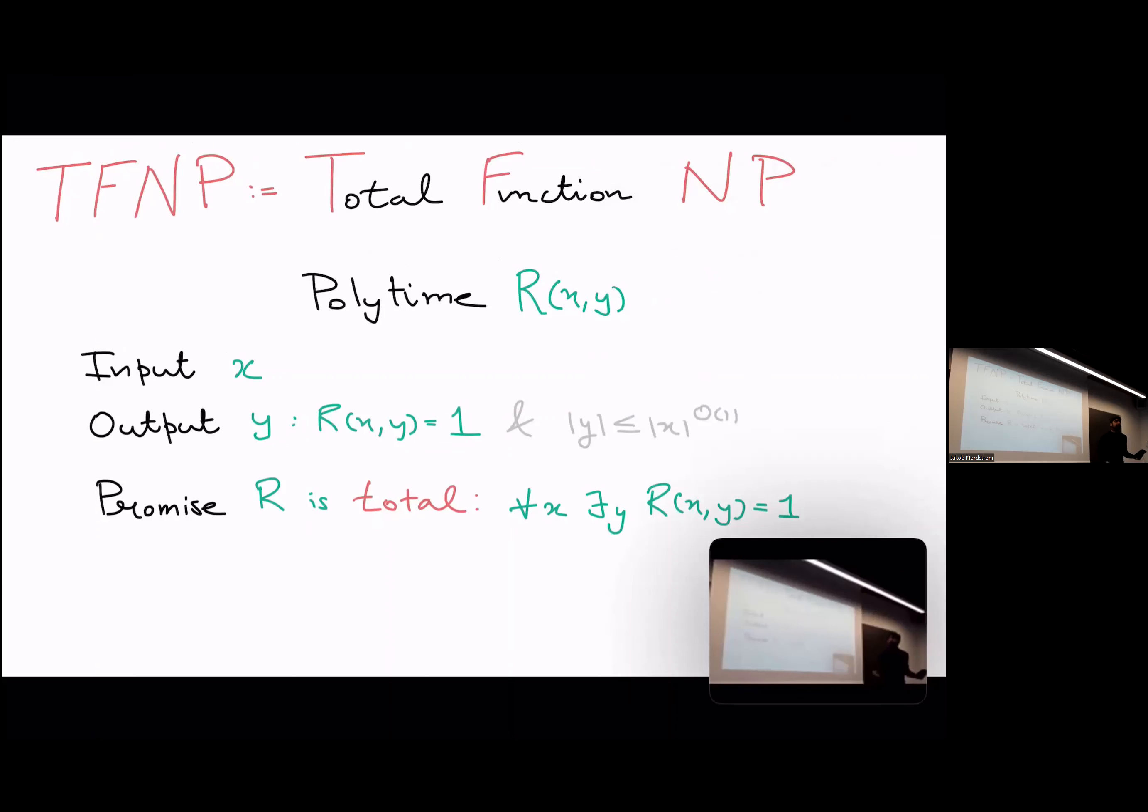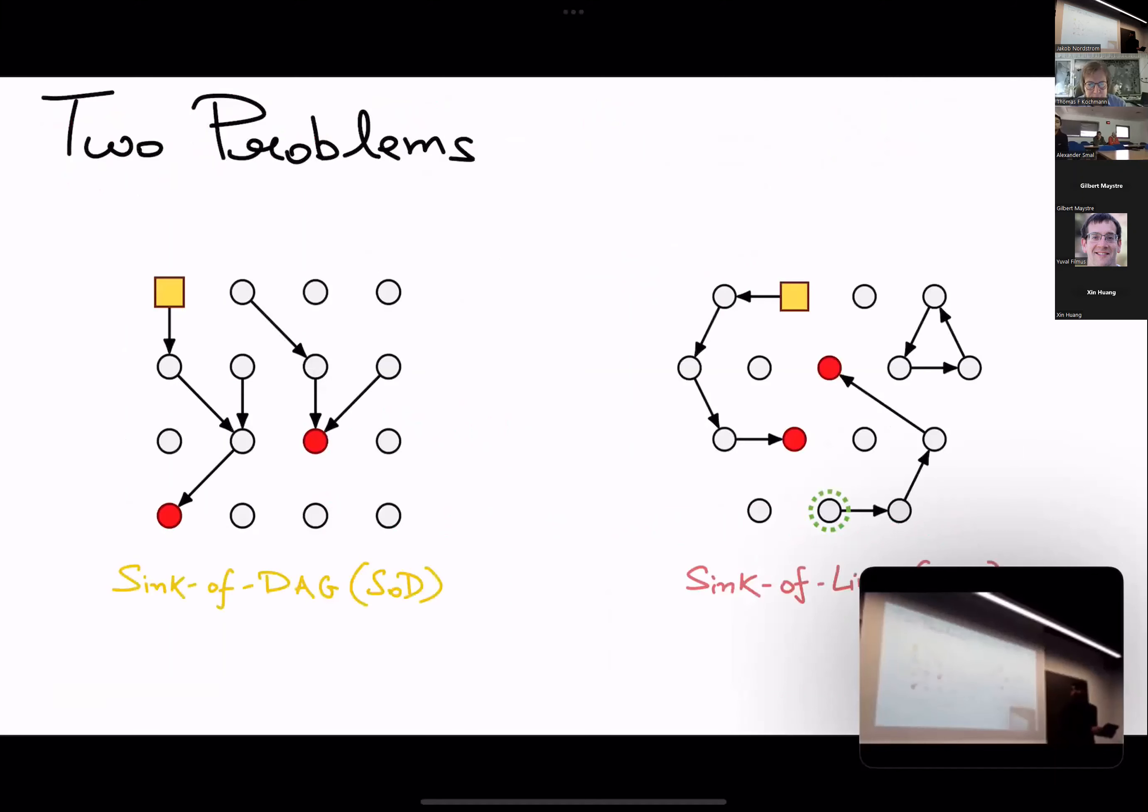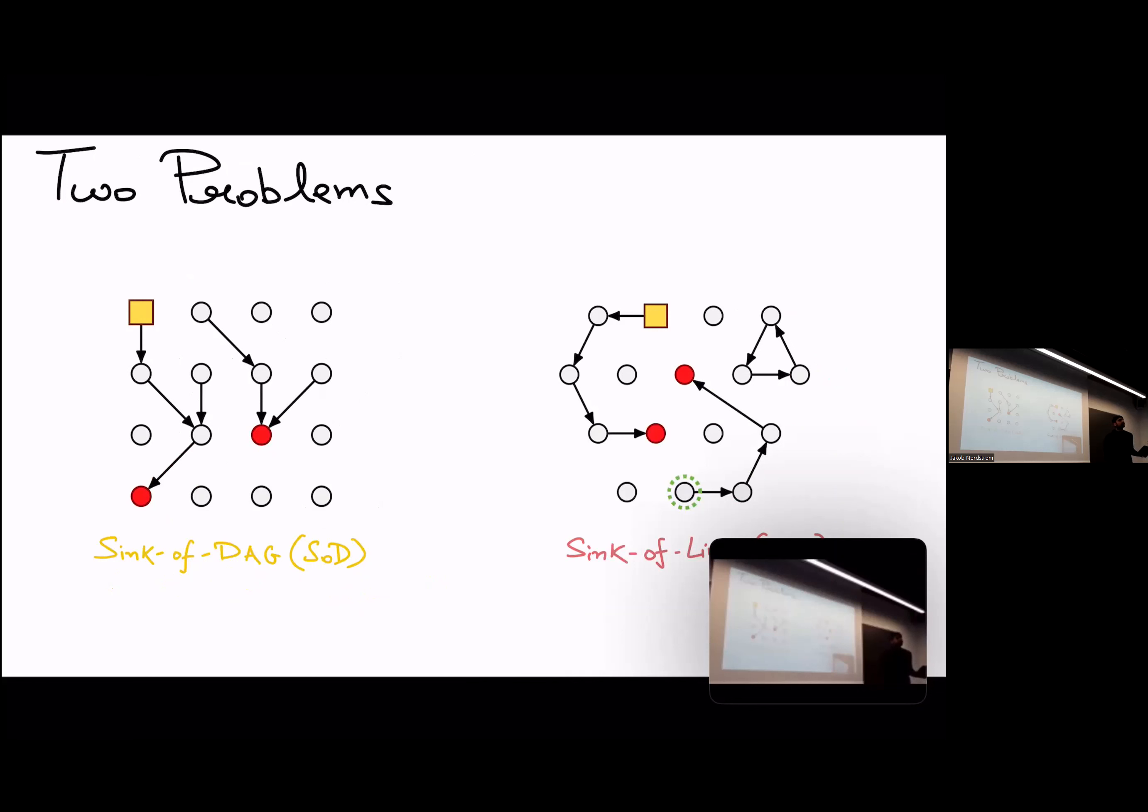The promise that you have is that R is total, which is what the T stands for, which means that for every input there is an output such that this pair is in the relation. And this is what makes this class interesting because the decision problem is trivial.